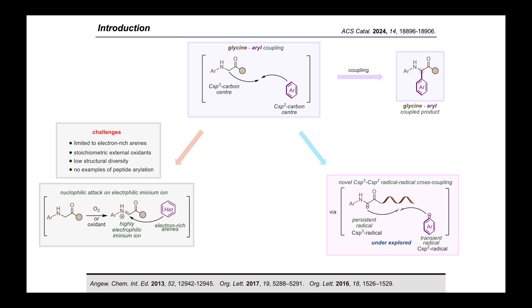Then we asked ourselves, can we do the cross coupling of Csp3 radical from glycine or peptide with the aryl ring Csp2 radical via radical pathway which is highly unexplored and this can fix the present challenges for the modification of glycine or peptides.